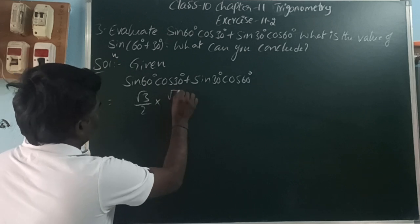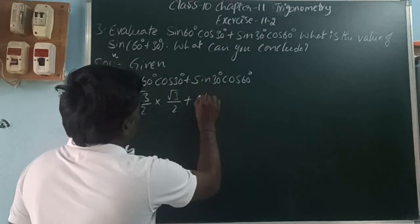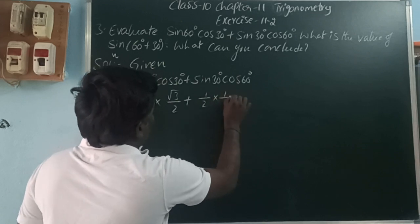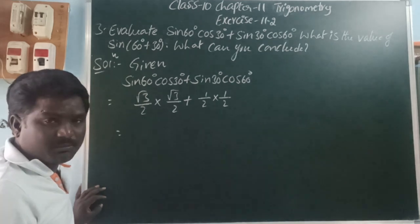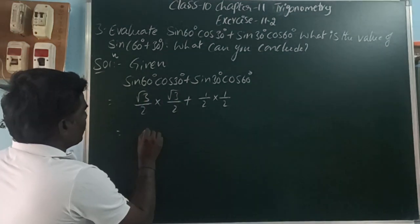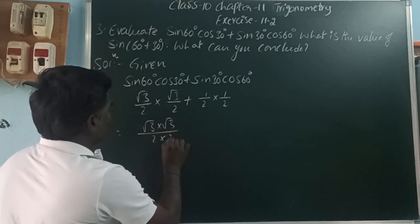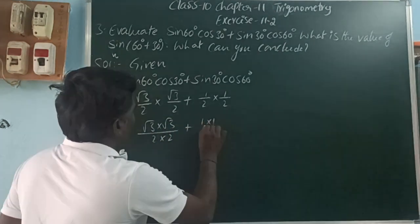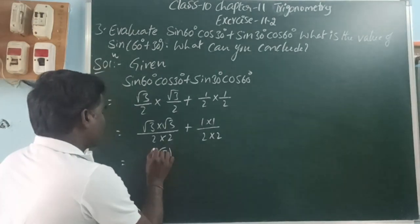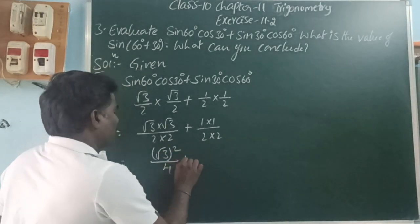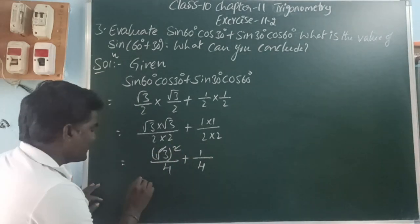cos30 is root 3 by 2, sin30 is 1 by 2, cos60 is 1 by 2. So the fractions are multiplied: numerator multiplied by denominator. Root 3 into root 3 by 2 into 2, plus 1 into 1 by 2 into 2. So root 3 times root 3 is root 3 squared, and 2 times 2 is 4.